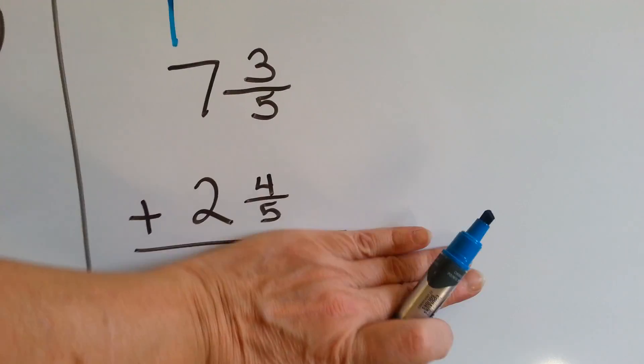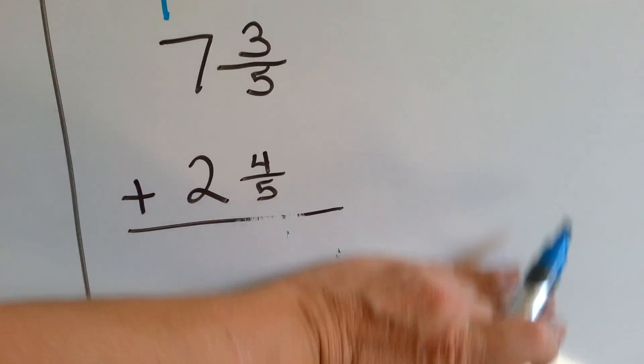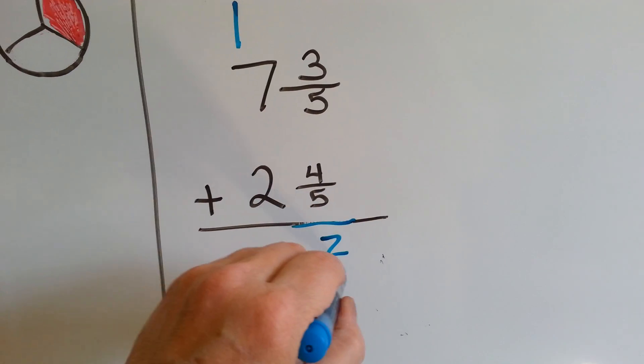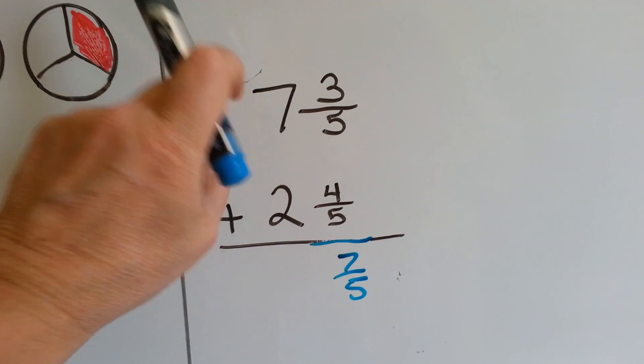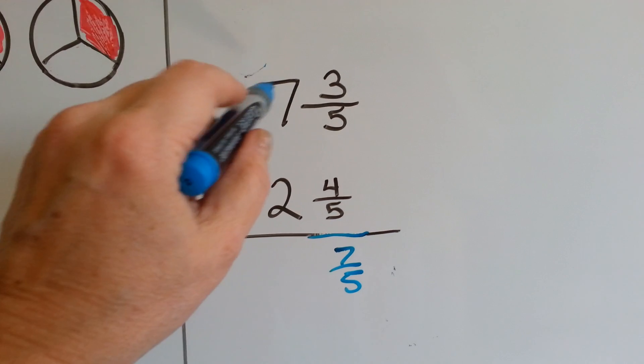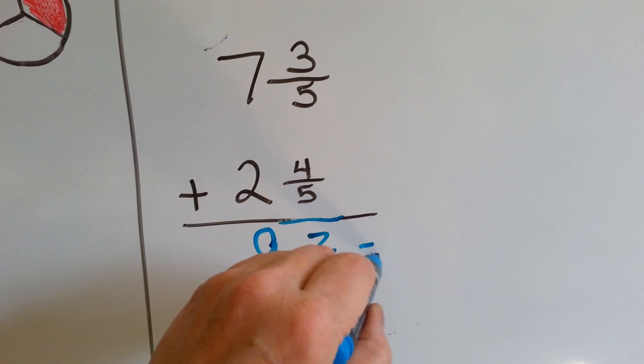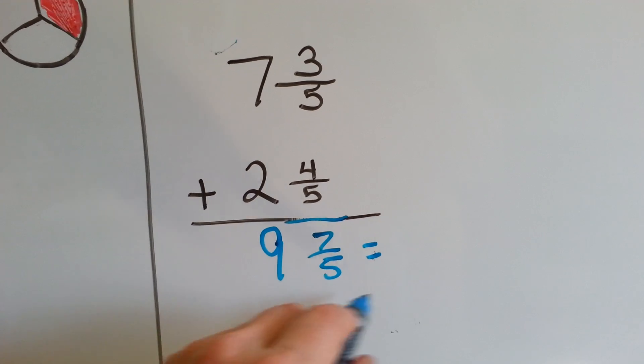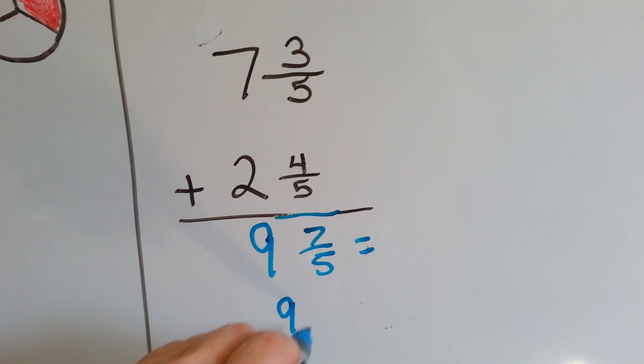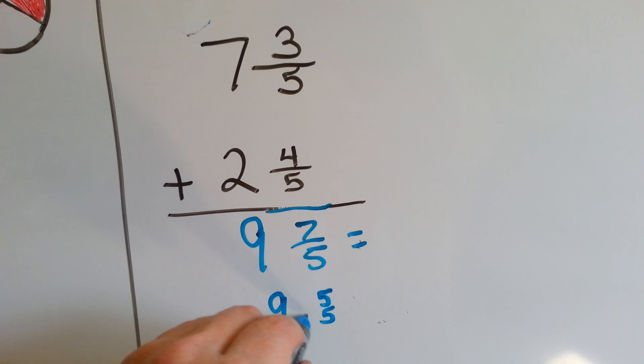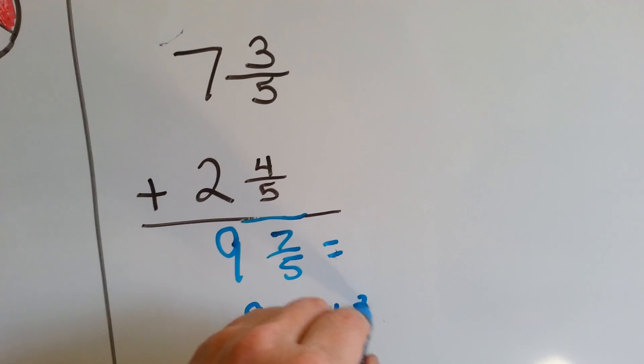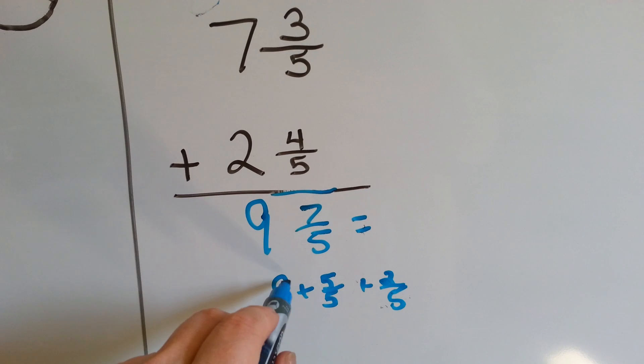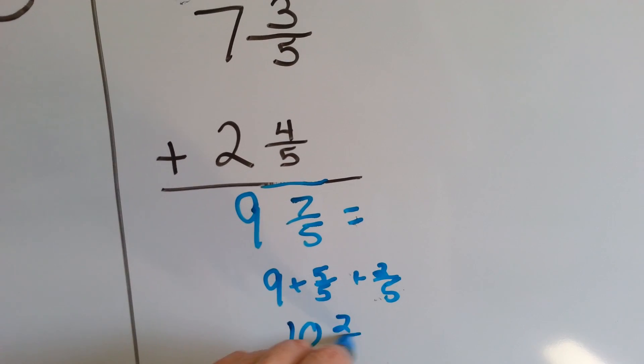Or, if we want to, we can do 7/5, not carry it over if that's easier for you, and make that 9, and now simplify it. 9 and 7/5 is equal to 9 plus 5/5 plus 2/5, right? Because there's a 5/5 in there, which would then be 10 and 2/5.